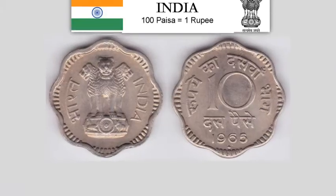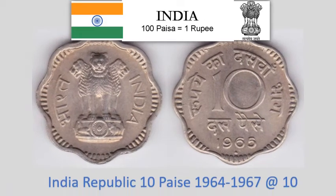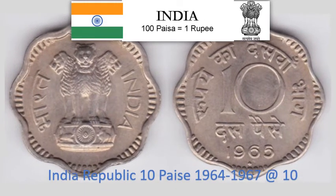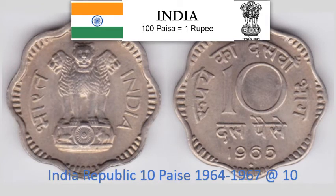India Republic 10 Paise 1964–1967. 4.9 gram Cupronickel scalloped coin with 8 notches, 23 mm diameter. Krause Reference No. 25. Approximate market value Rs. 10.